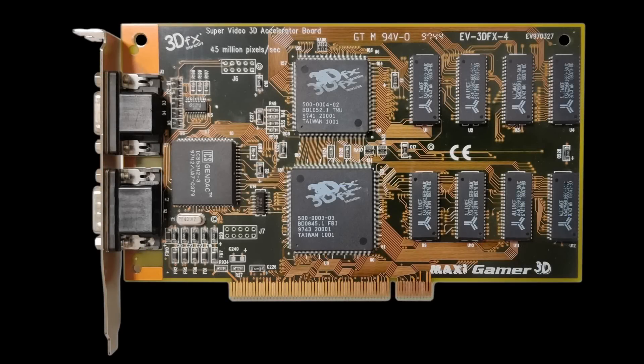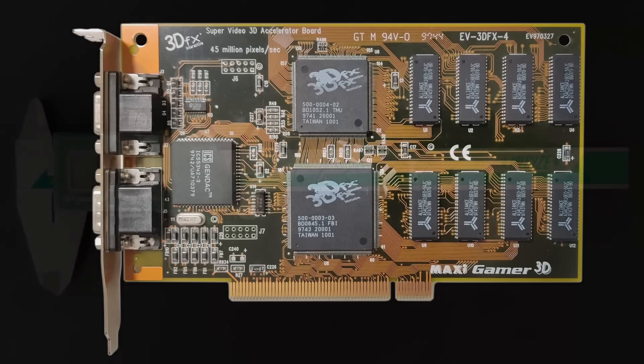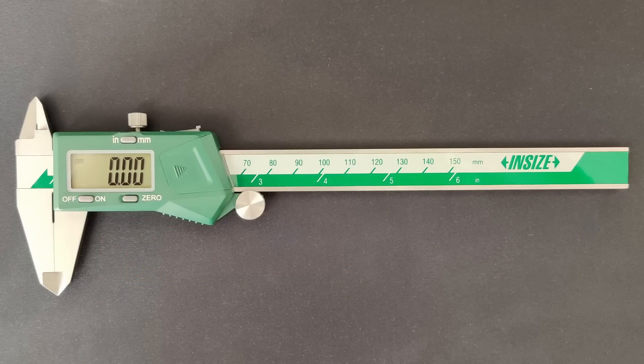I happened to have the same card that was used in the original mod, the Maxi Gamer 3D with 4 MB of memory. When I looked at the layout of how the memory ICs were aligned, I got an idea how to upgrade my card without messing up the original memory chips. Armed with digital calipers, I started measuring distances between pins, chips, heights, length and widths.